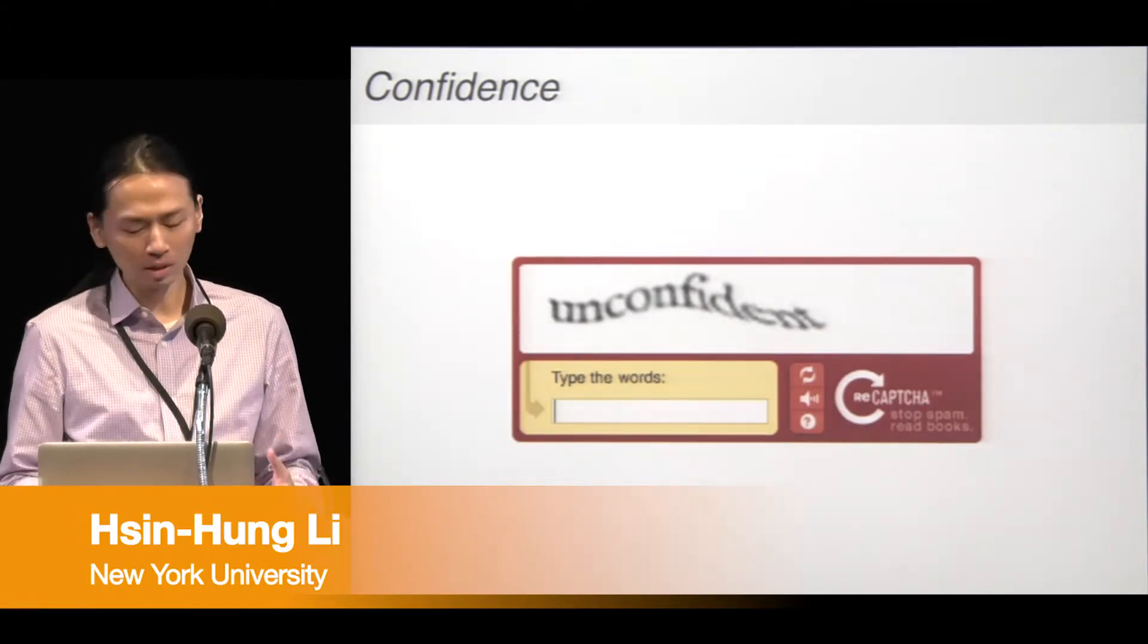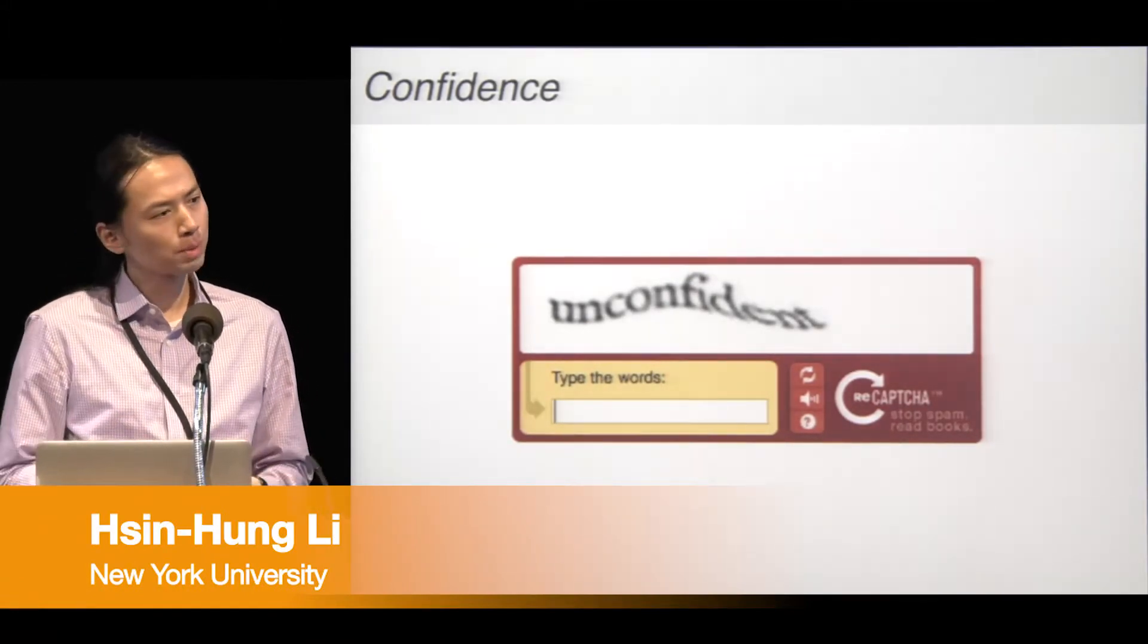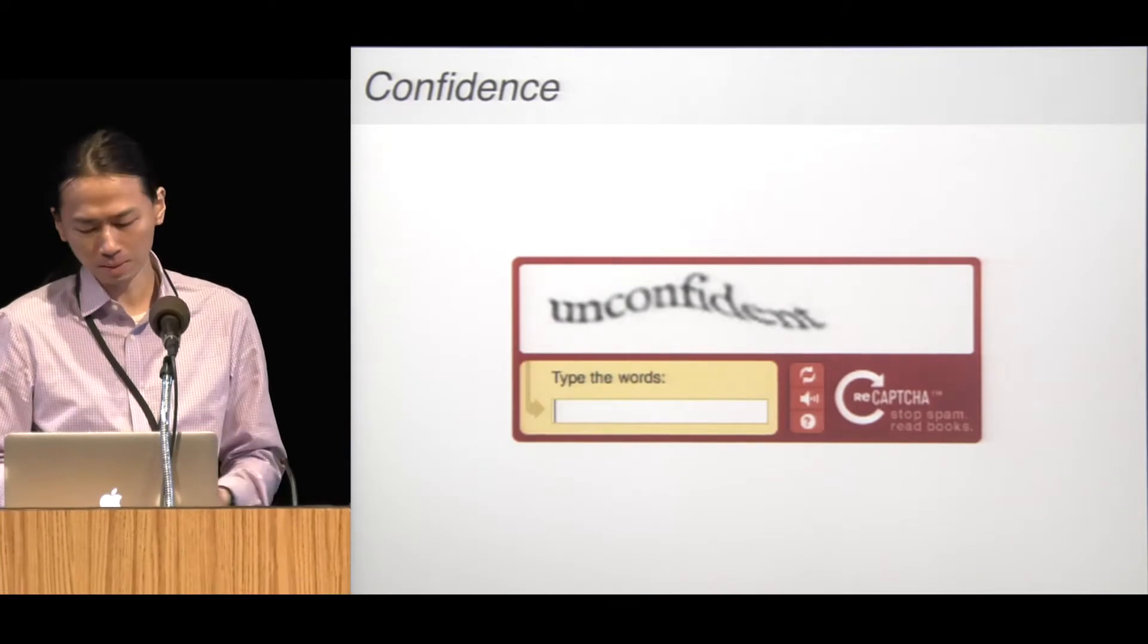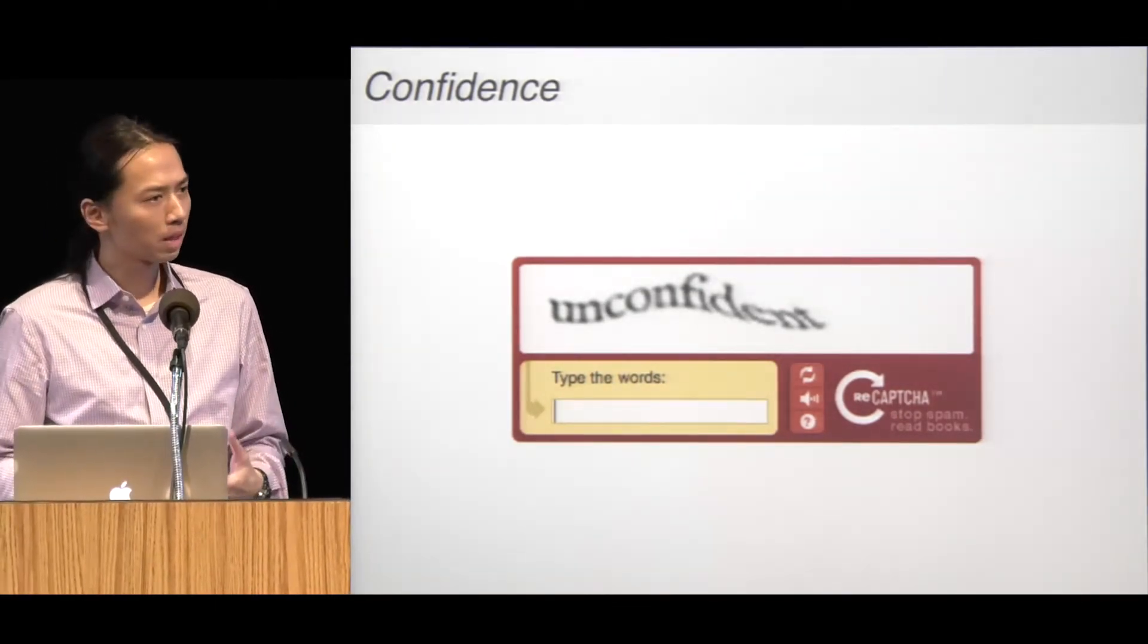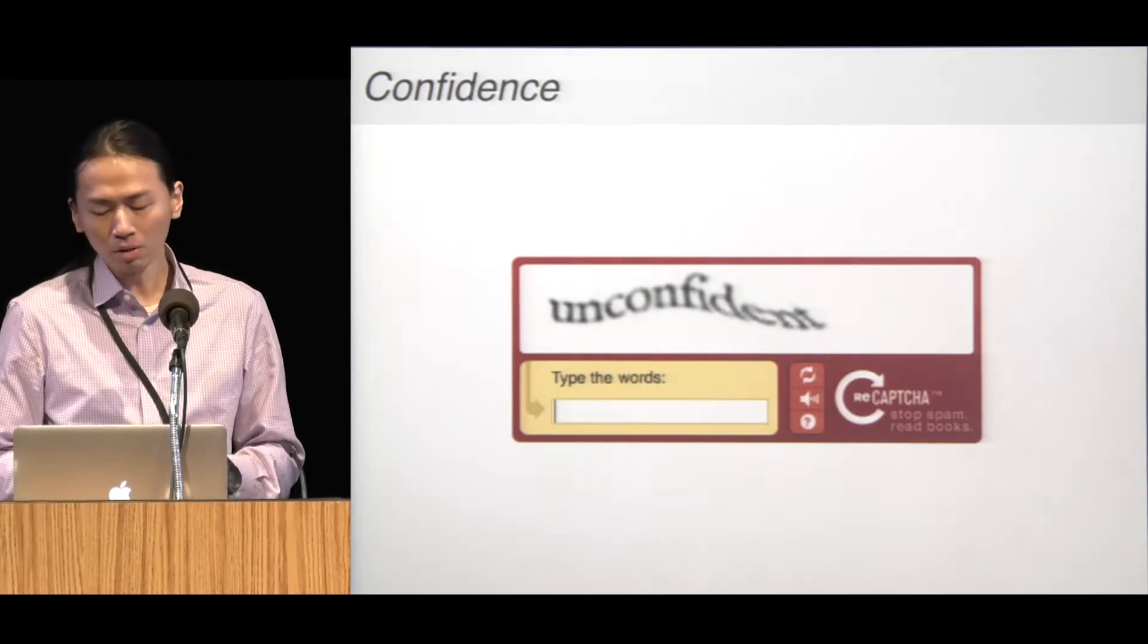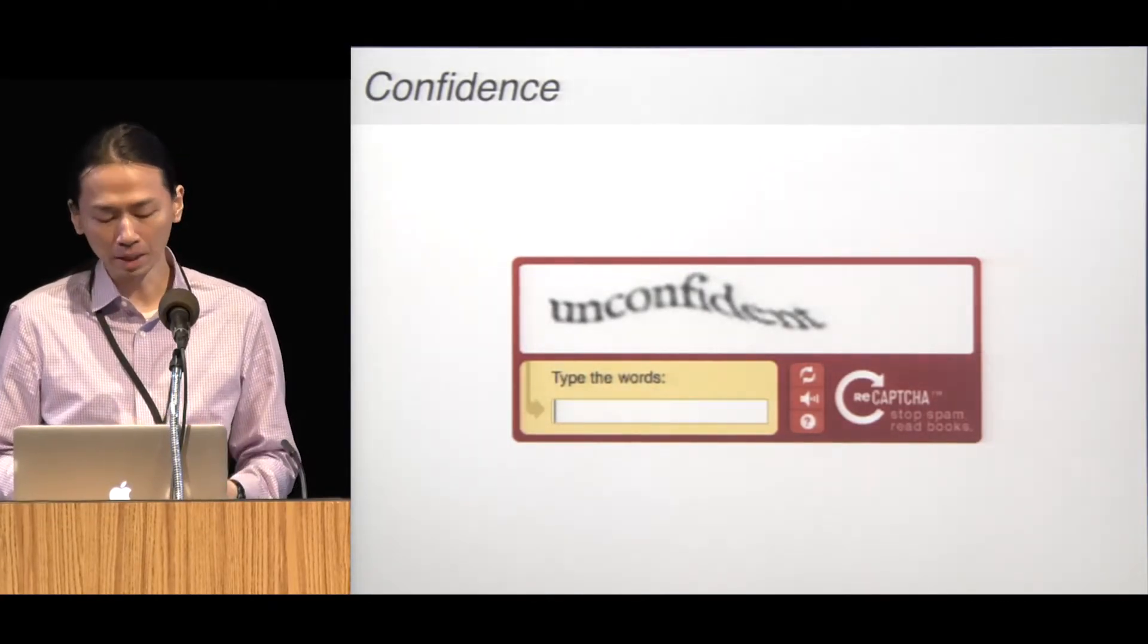Neural processing is inherently noisy, so when making a decision, people often have a sense of confidence. Confidence is not only a subjective feeling that arises with a decision, it often influences one's behavior.